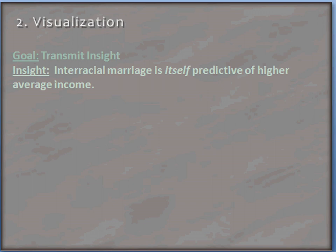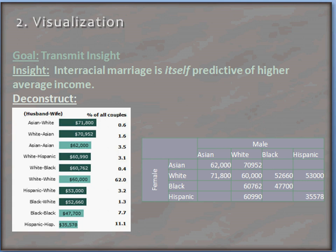Let's create a visualization to summarize what we've learned. Remember that our goal is to transmit insight. The insight we gained from our analysis was that interracial marriage is itself predictive of higher average income. The next step is to deconstruct the data. We have a visualization already, and we want to break it down into raw data, so we've created a table. This table shows the median earnings for male and female couples of a variety of different races. The female's race is determined by the row and the male's by the column. We can see that we don't have a complete data set — not all pairings are considered.